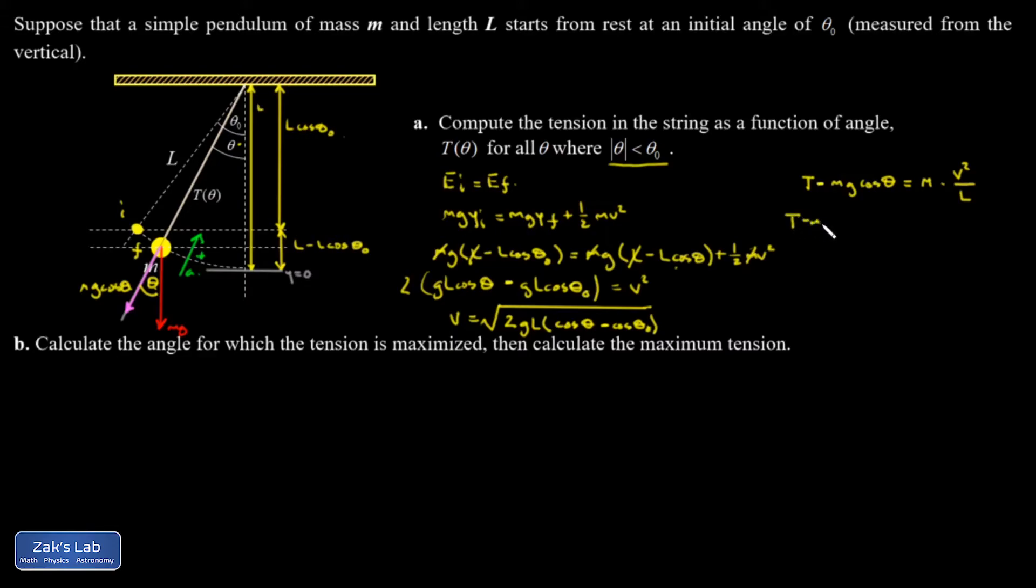I get T minus mg cosine theta equals m over L times the inside of that square root, so 2gL times cosine theta minus cosine theta naught. Some nested parentheses there. Looks like the L's are going to cancel out. I'll go ahead and add the mg cosine theta to both sides. So T is going to be mg cosine theta plus 2mg times cosine theta minus cosine theta naught.